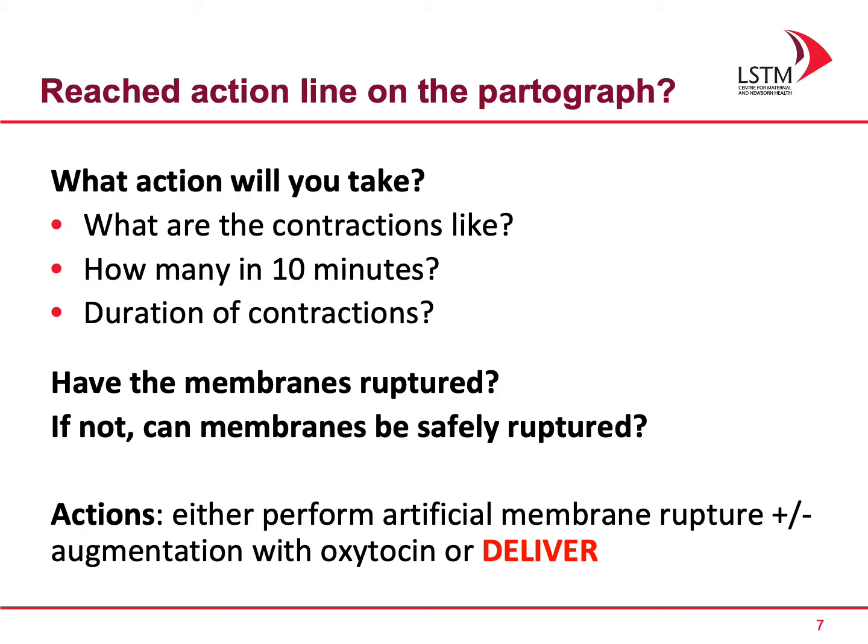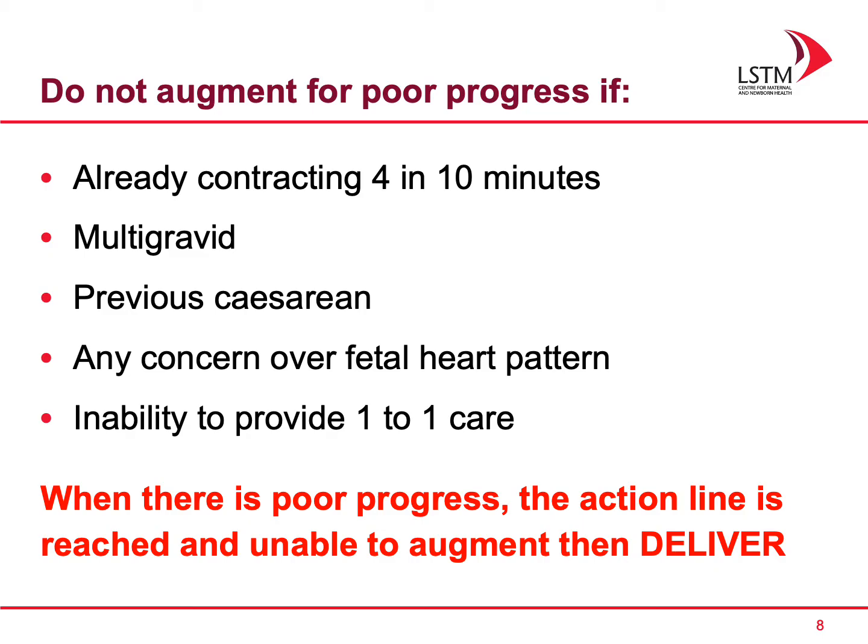You need to ask yourself if the membranes have ruptured, and if not, can they be safely ruptured? The actions you can take are either to perform an artificial rupture of the membranes, with or without augmentation with oxytocin, or you may decide to deliver her. You should not augment for poor progress if she is already contracting 4 in 10 minutes, if she is multigravid, had a previous caesarean section, if there is any concern over the fetal heart rate pattern, or if there is an inability to provide one-to-one care.